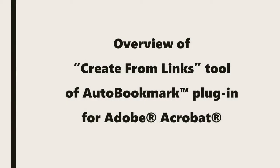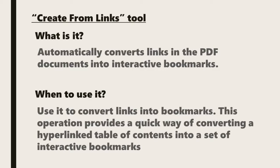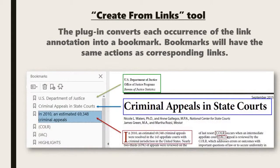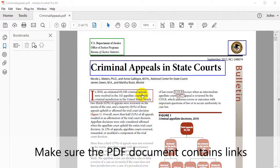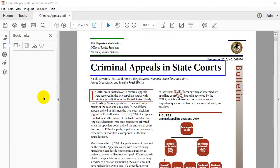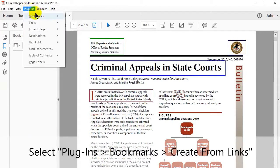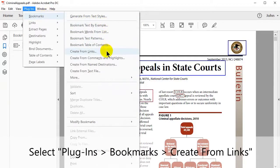Now let's look at an overview of the Create from Links tool in the Auto Bookmark plugin. This tool automatically converts links in PDF documents into interactive bookmarks. We would use this when we want a quick way of converting a hyperlinked table of contents into a set of interactive bookmarks. The plugin converts each occurrence of the link into a bookmark, and these bookmarks will have the same actions as corresponding links. Make sure that the PDF you're using contains links, then go to Plugins, Bookmarks, and select Create from Links.